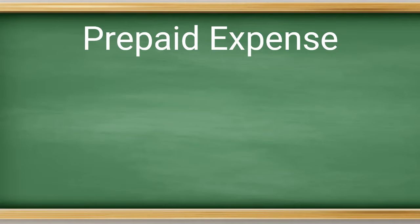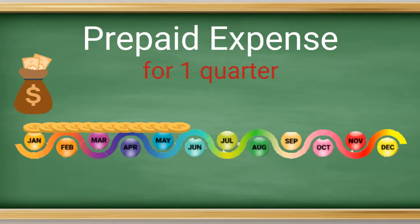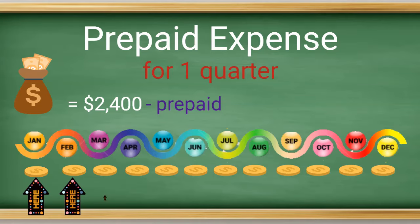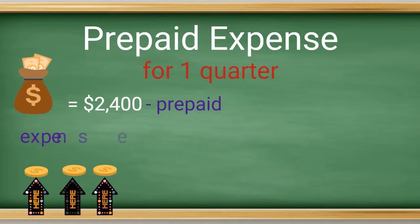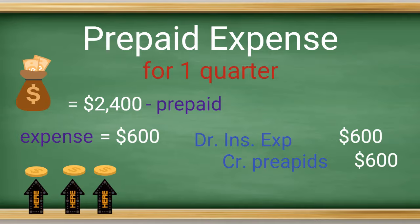Next is prepaids. Let's change up our adjusting entry period to a quarter for this one. You pay $2,400 for a one-year insurance policy. When you bought the policy, your entries were a debit to prepaid insurance and a credit to cash. You're attempting to recognize the expense for the full quarter — that's three months, or one fourth of the policy. Therefore, our expense is $600. This adjusting entry for the quarter is a debit to insurance expense and a credit to prepaid insurance.